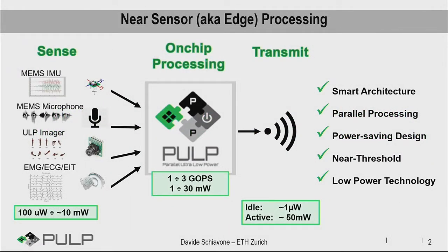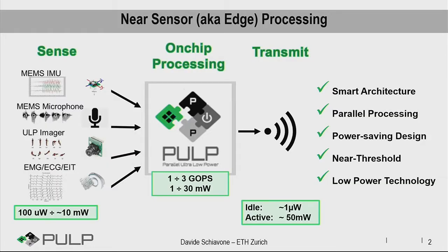Let's give a bit of context. We care about edge processing, so on-chip processing, in the IoT domain application closed-loop system. For this reason, we built PULP, which is a multi-core microcontroller platform. PULP stands for Parallel Ultra-Low Power. We provide high performance for very little power consumption, achieved through smart architecture and parallel processing, as well as power-aware design, near-threshold computation, and low-power technology nodes.